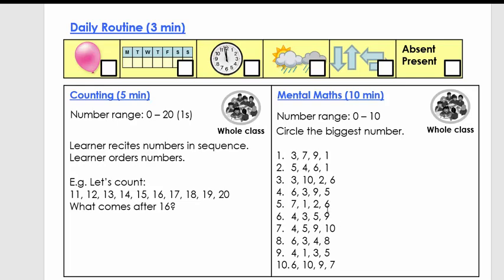Seven, seven, one, two, six. Brilliant, seven is the biggest. Four, three, five, nine. Clever child, nine is the biggest. Four, five, nine, ten. Excellent, it's number ten. Six, three, four, eight. Excellent, it's number eight.